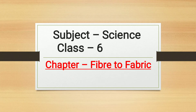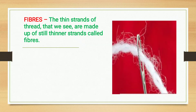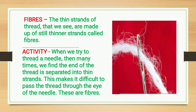This video is for Science Class 6, Chapter: Fiber to Fabric. What are fibers? The thin strands of thread that we see are made up of still thinner strands called fibers. When we try to thread a needle, many times we find the end of the thread is separated into thin strands, making it difficult to pass through the eye of the needle. These are fibers.